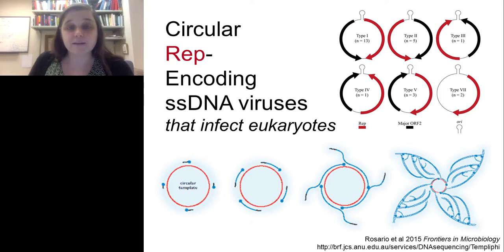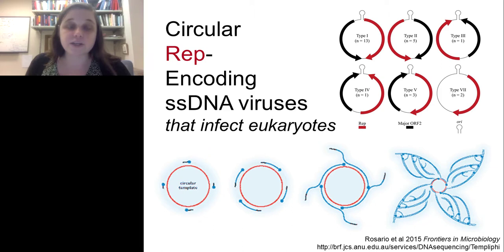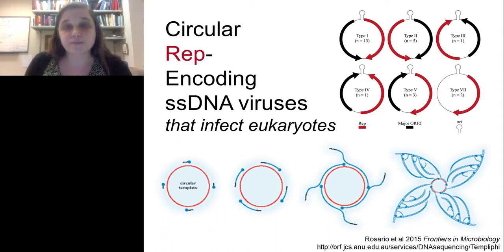We are learning so much more about CRESS DNA viruses, especially those that infect eukaryotes, because of the commercialization of the phi29 polymerase, marketed as TempliPhi, which does rolling circle amplification. It preferentially amplifies circular single-stranded DNA, meaning if any CRESS DNA viruses are in your metagenomic sample, you'll get an overrepresentation of them — making many researchers inadvertent CRESS DNA viral discoverers.